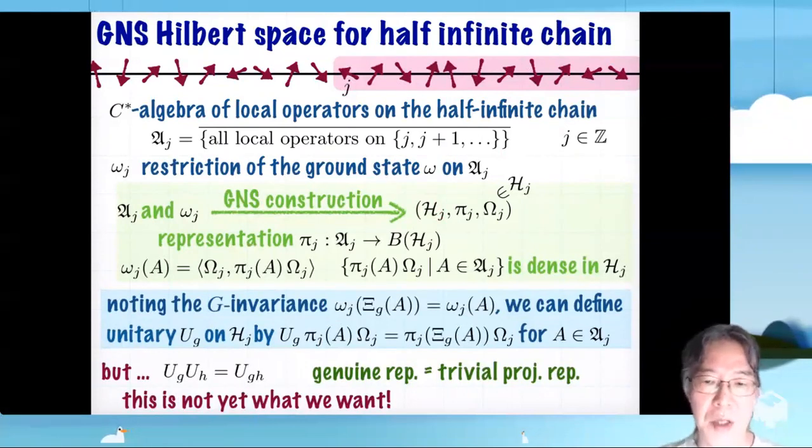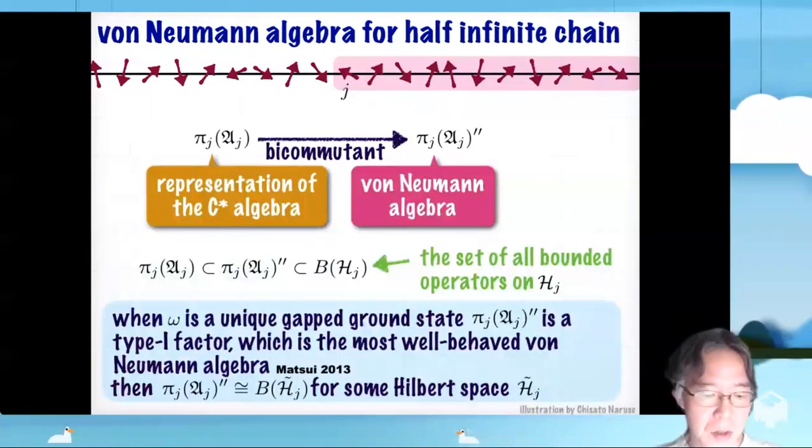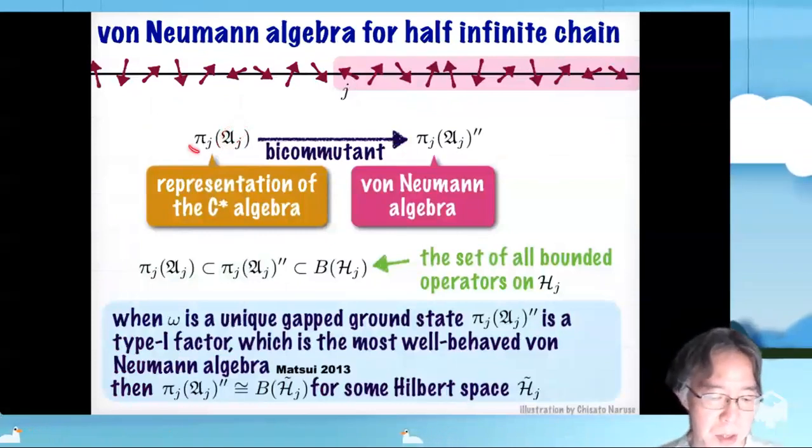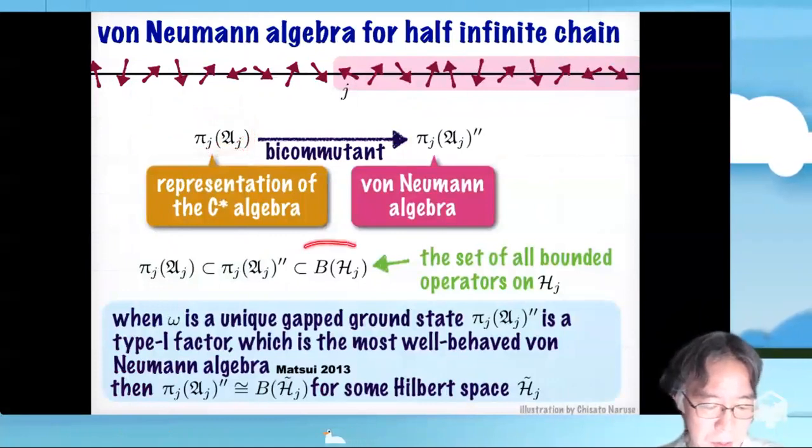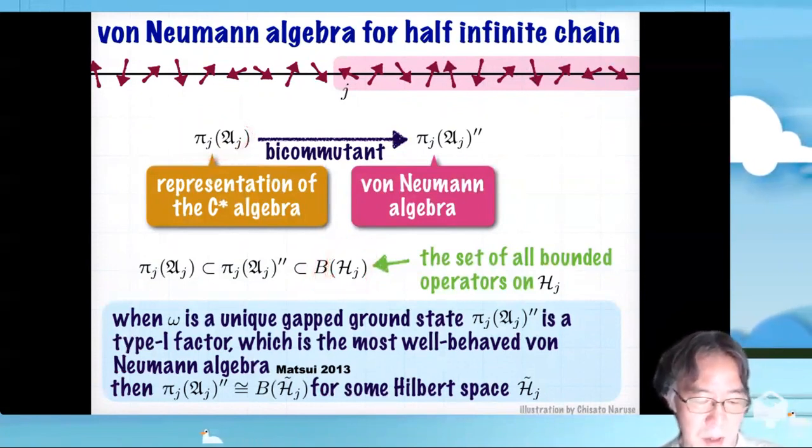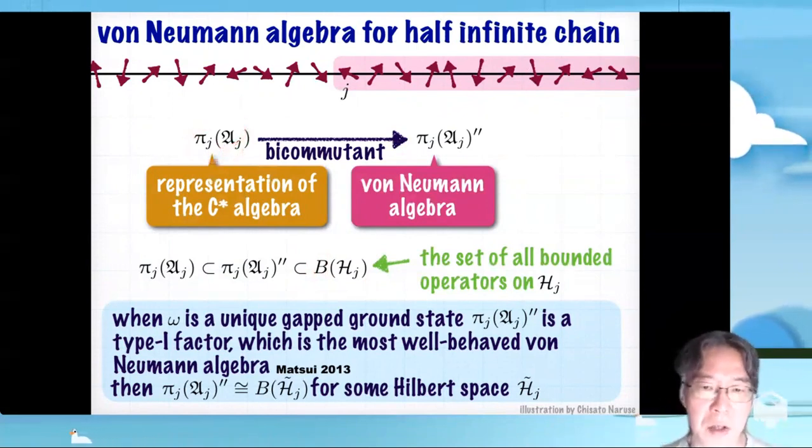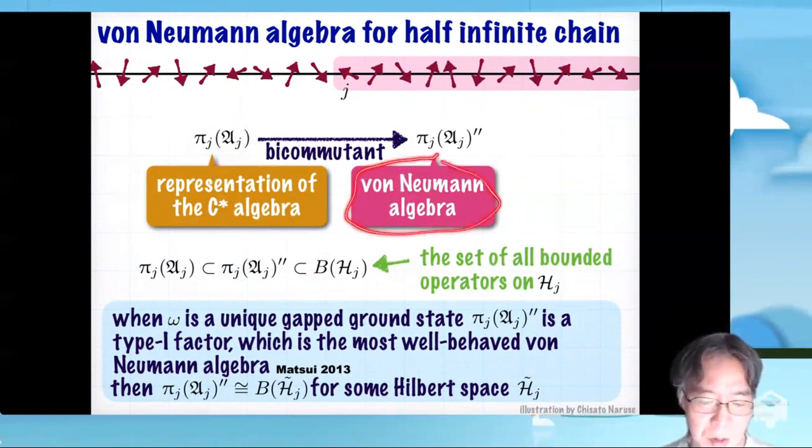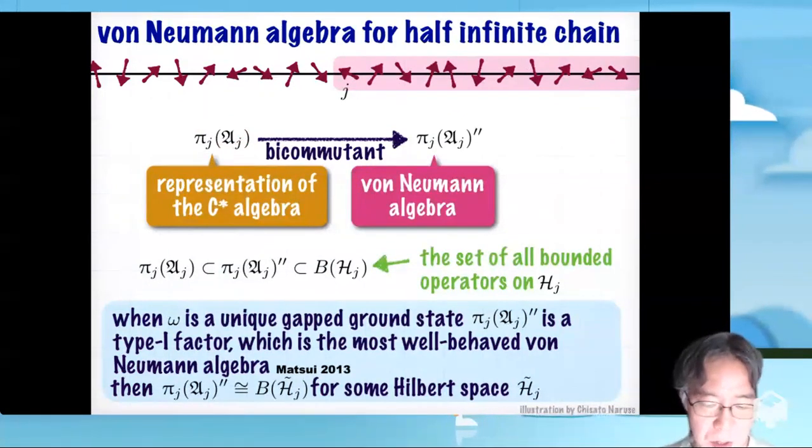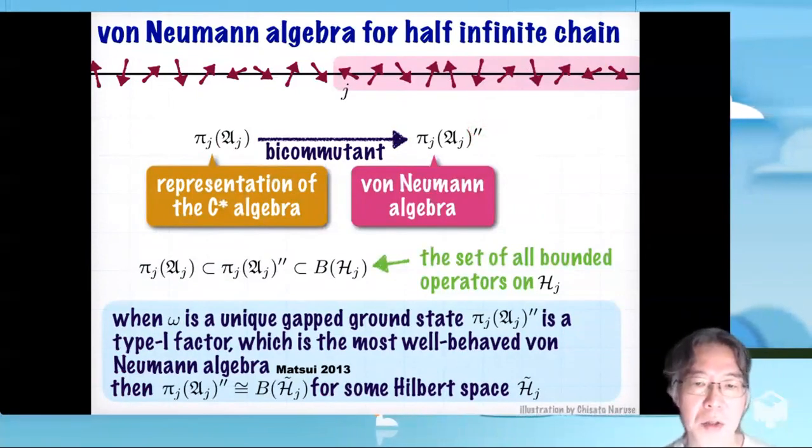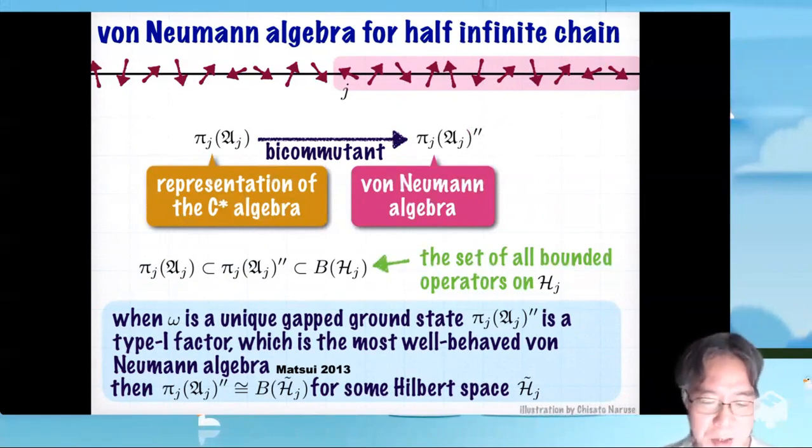In order to use this fact we need something more. ℛⱼ is a C* algebra, πⱼ is a representation so πⱼ(ℛⱼ) is a subset of the set of all bounded operators on ℋⱼ. And this thing itself is a C* algebra. Then there is a standard procedure to make this thing slightly larger and make it into mathematically natural object called von Neumann algebra. And this procedure is this double prime, called bicommutant, or equivalently, the closure with respect to the weak topology.